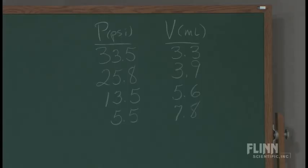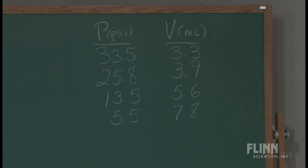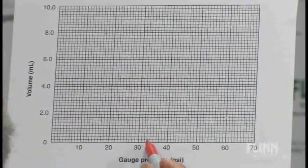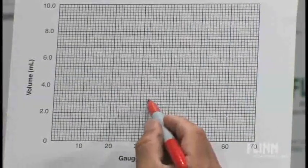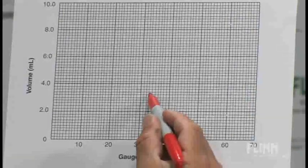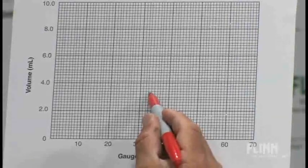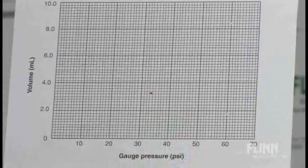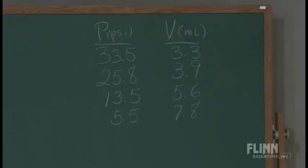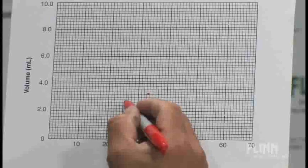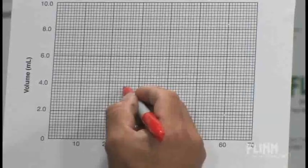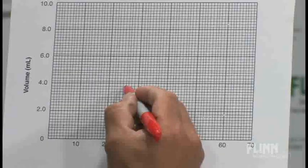Our first pressure was 33.5 and the volume was 3.3, so 33.5 up to a volume of 3.3, right about there. My next volume was 3.9 at a pressure of 25.8, so where's 25.8? We'll go to the 26 line then go just short of it, and up to 3.9, right about there.